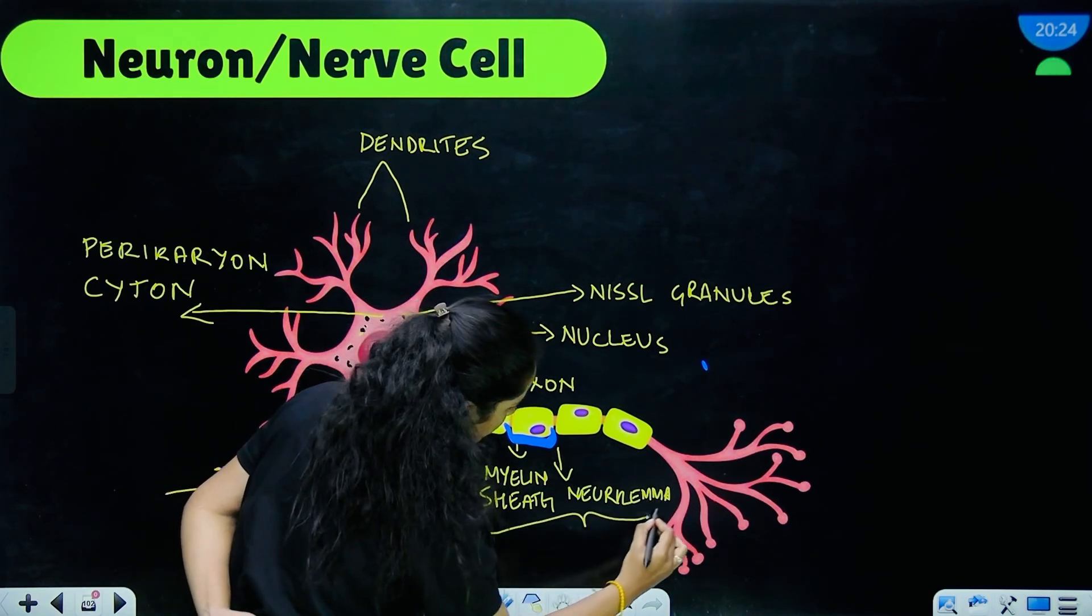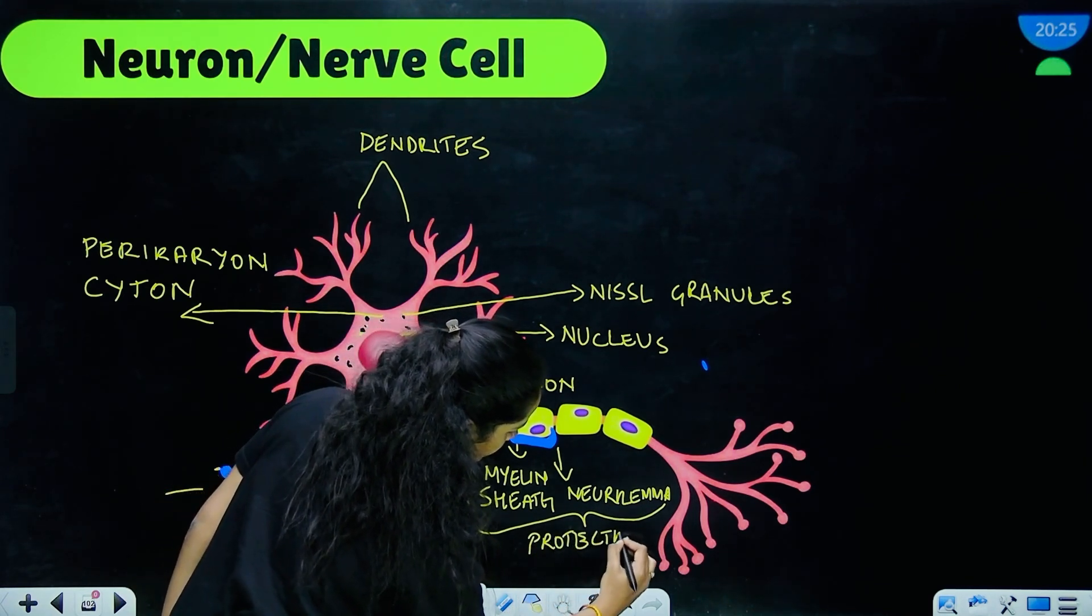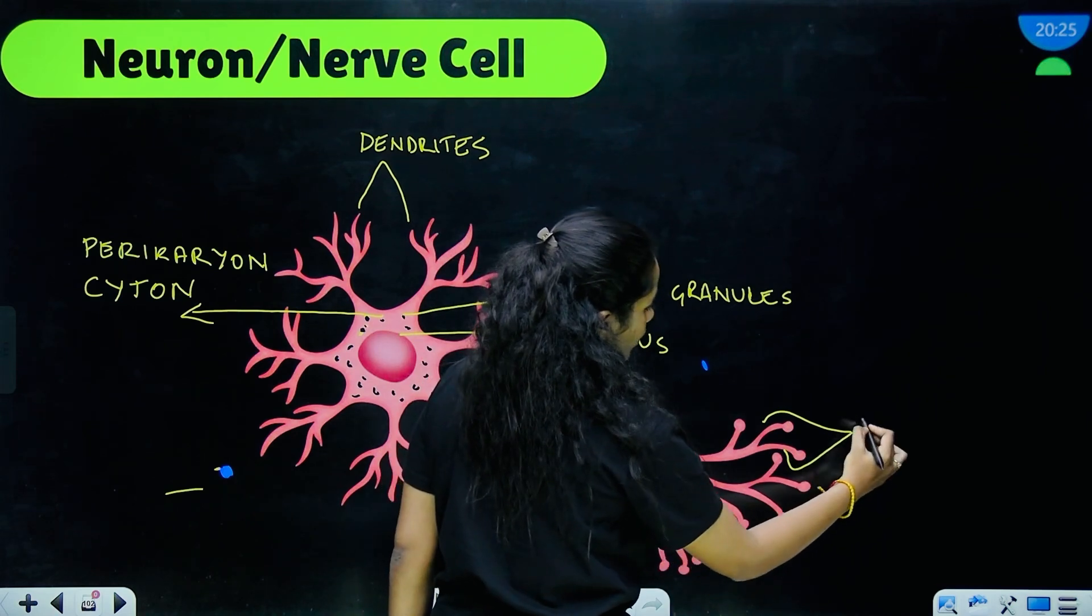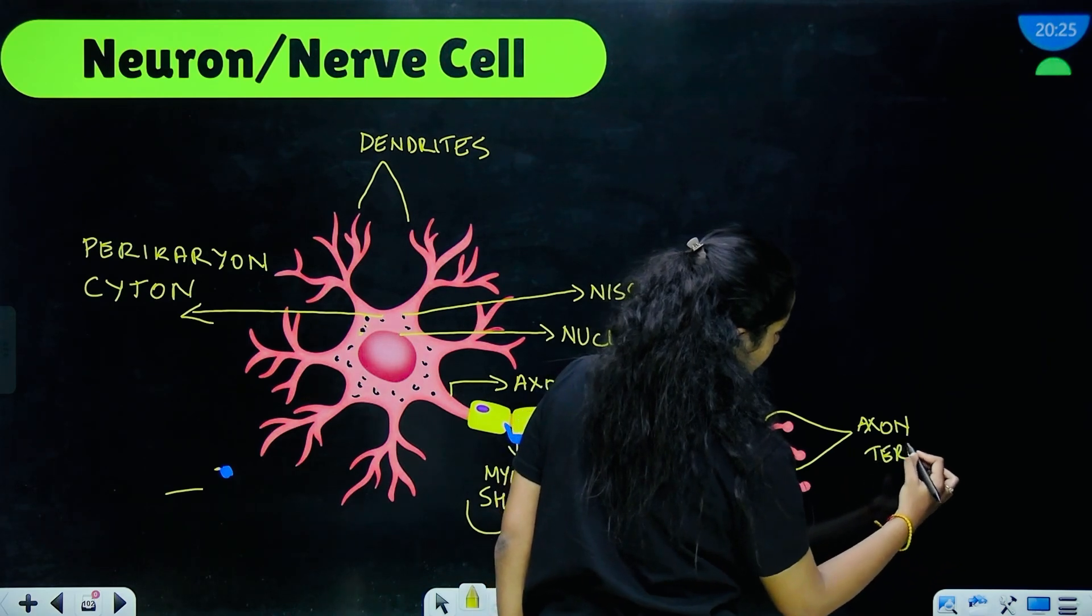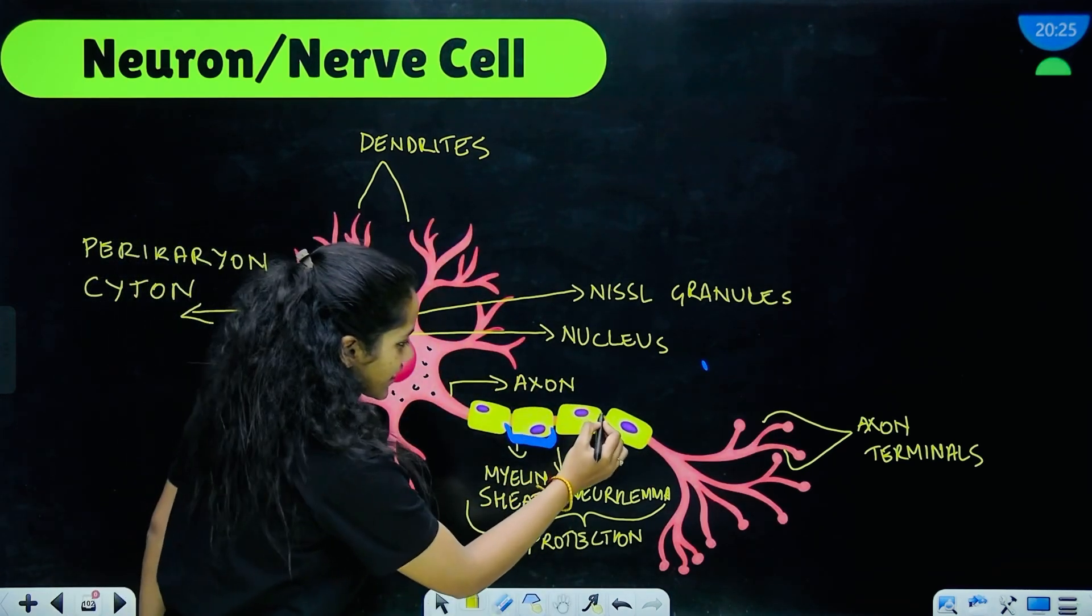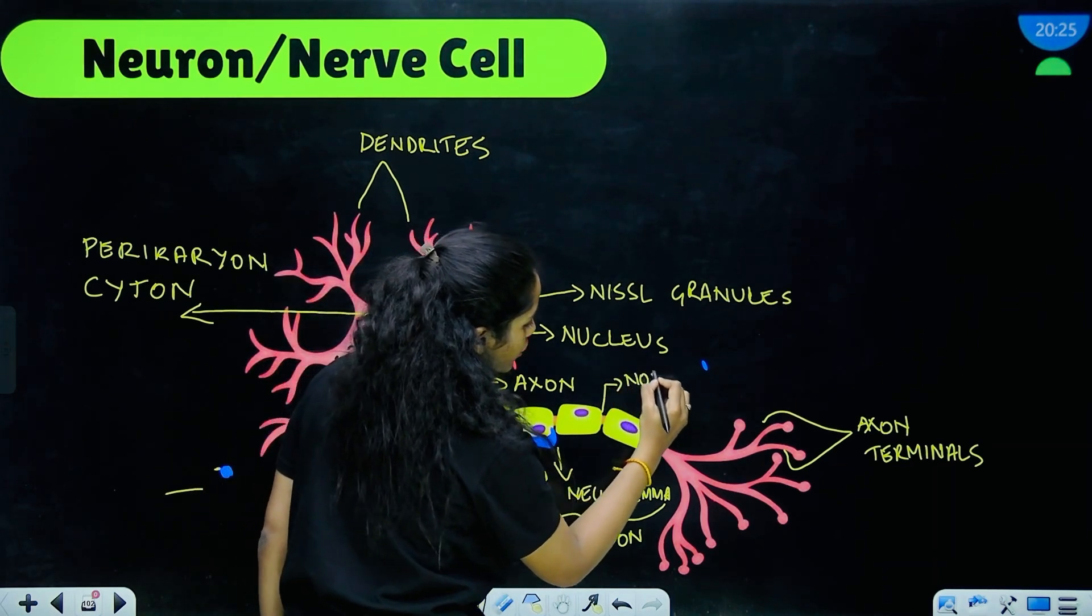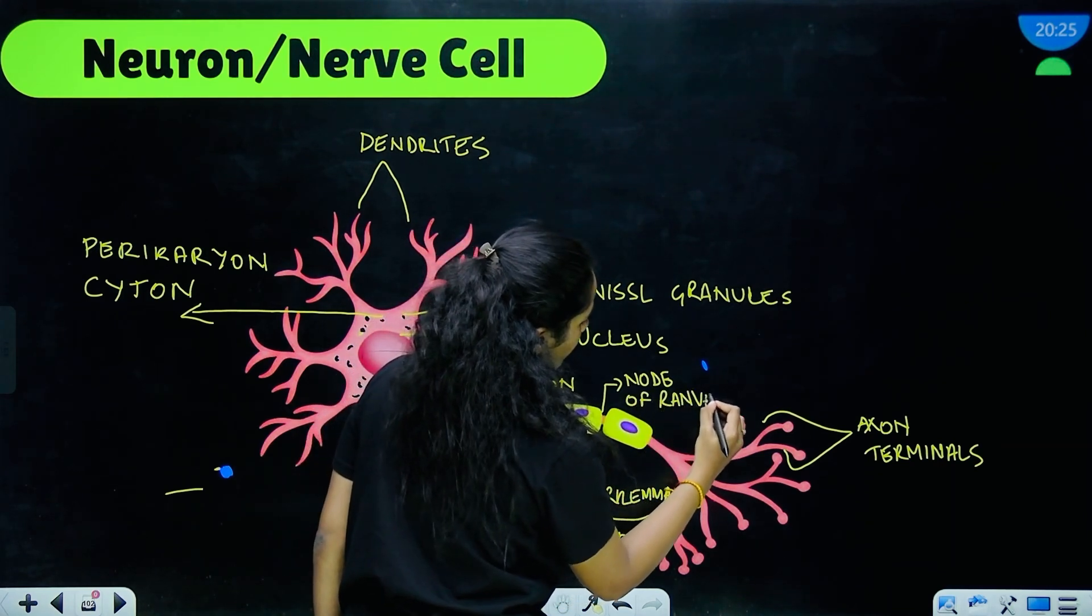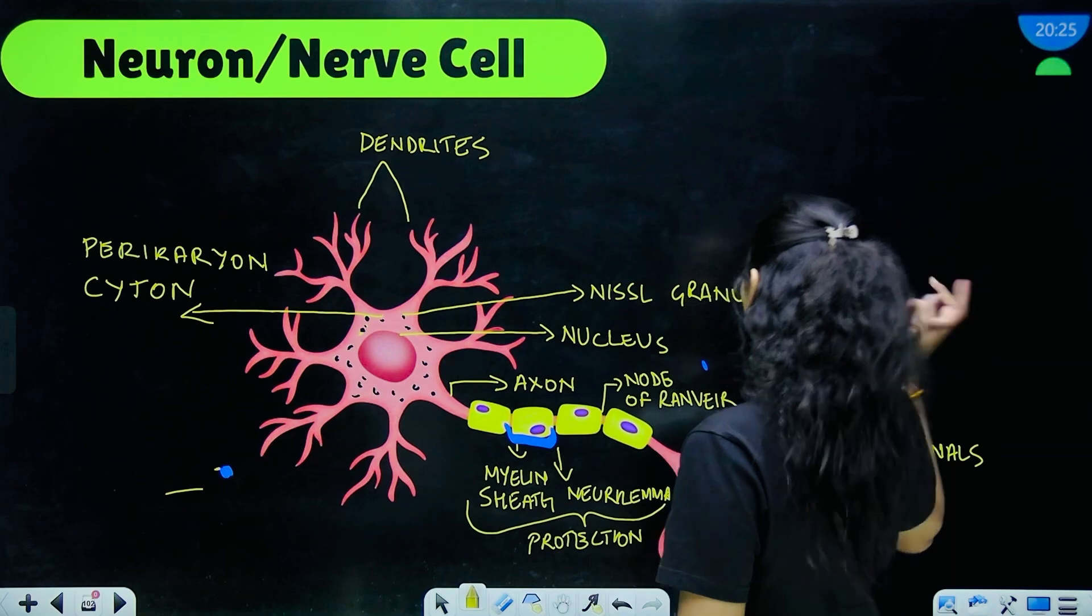These over here are called the axon terminals and this gap between the myelin sheath are called the node of Ranvier. Don't expect Deepika Padukone to be there—that's lame, I know.